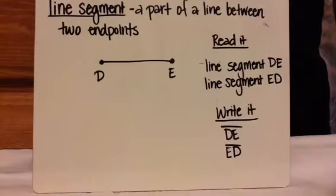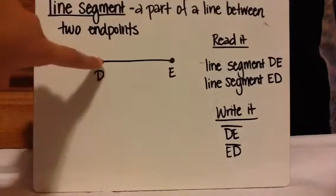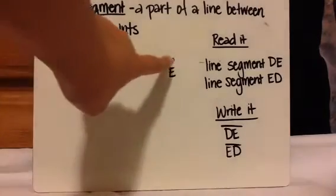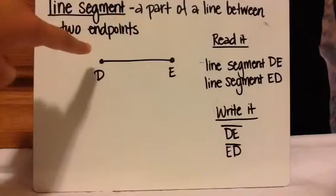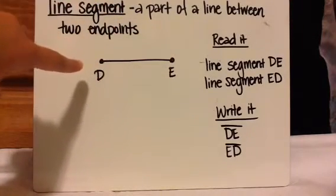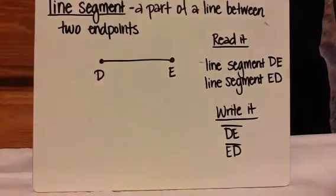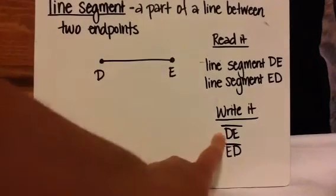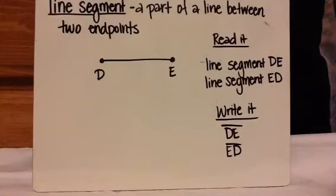The next one is called a line segment. A line segment is a part of a line between two endpoints. Notice this is different from a line — a line has arrows and goes on forever. A line segment has two points showing where it starts and where it ends; it does not keep going. So you call it line segment DE, or you can read it the other way, line segment ED. The way to write it is you write DE and draw a line above it without arrows, or ED with a line and no arrows.